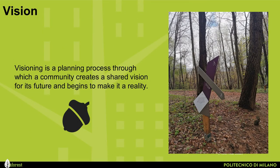A vision statement includes the elements that describe both the urban forest itself and how it is cared for and valued by the people who manage it. For example: if we achieve our goals, how will the area be different than it is now? Or, what do we want the urban forest to look like as a result of the plan? Visioning is a planning process through which a community creates a shared vision for its future and begins to make it a reality.